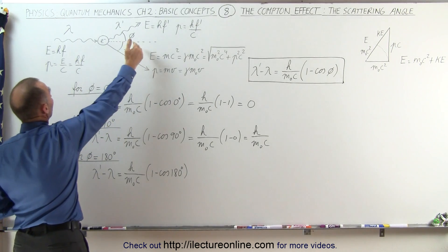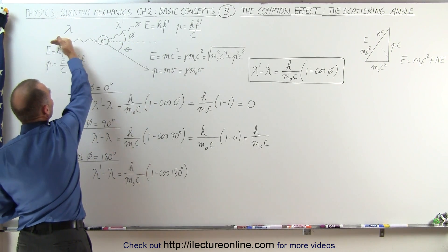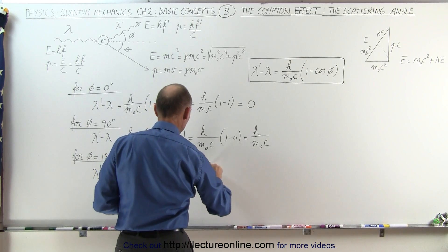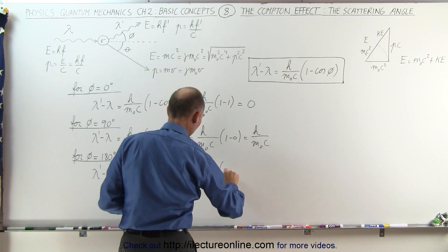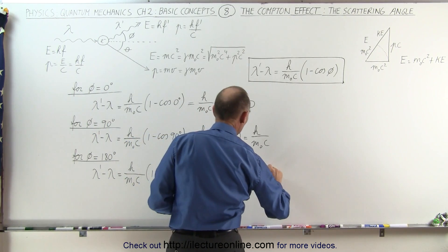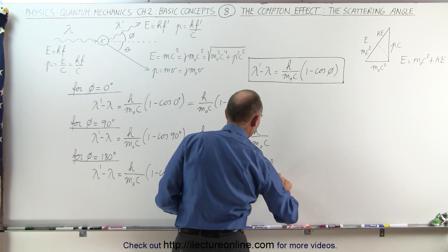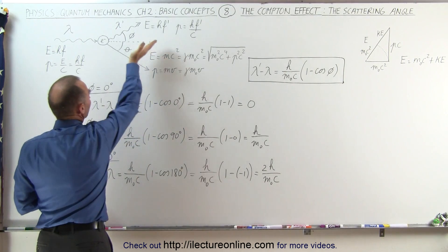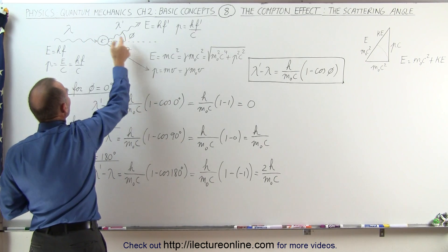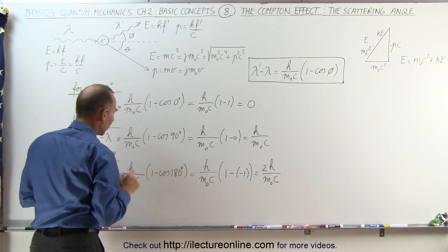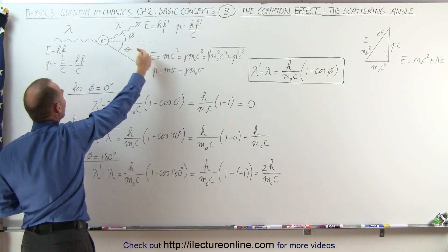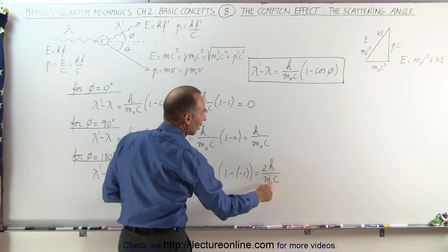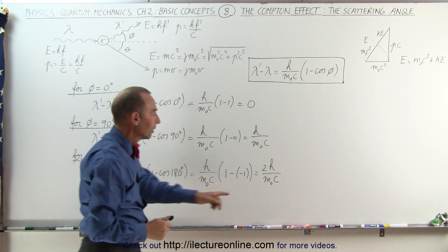Finally, if the photon scatters all the way back in the opposite direction — that is, the angle is 180 degrees — the cosine of 180 degrees is negative one, which means this equals h divided by m-naught c times one minus negative one, giving twice h over m-naught c. Notice how the change in the wavelength keeps getting bigger as the scattering angle gets bigger. The maximum difference in wavelength in Compton scattering happens when the scattering angle is 180 degrees, giving a change of two times Planck's constant divided by the mass of the scattering particle and the speed of light.